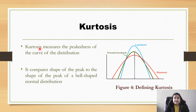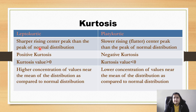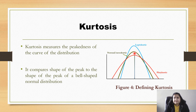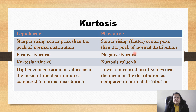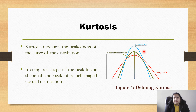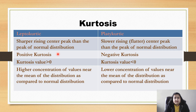Kurtosis measures the peakness of the curve and compares the shape of the peak to that of a bell-shaped normal distribution. Kurtosis can be of two types: leptokurtic and platykurtic. A leptokurtic curve has a sharper, rising center peak than the normal distribution — this is positive kurtosis, meaning the kurtosis value is greater than zero. There is a higher concentration of values near the mean compared to the normal distribution. The normal distribution itself is also known as mesokurtic.